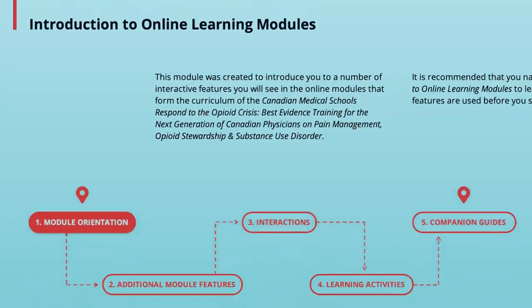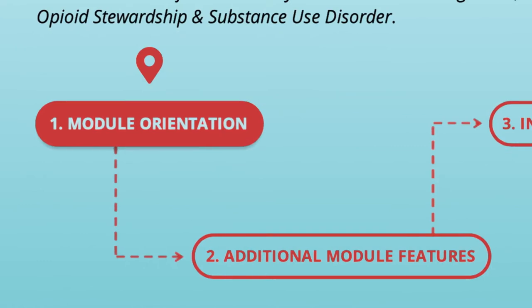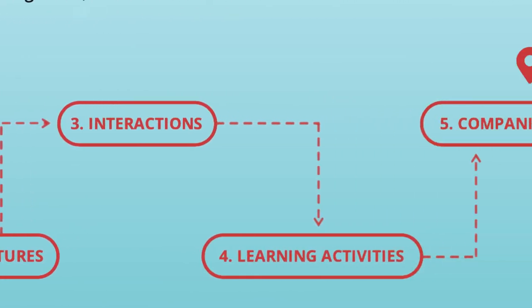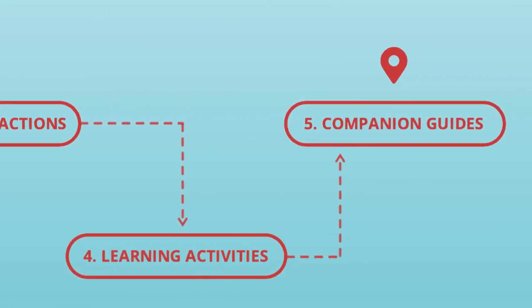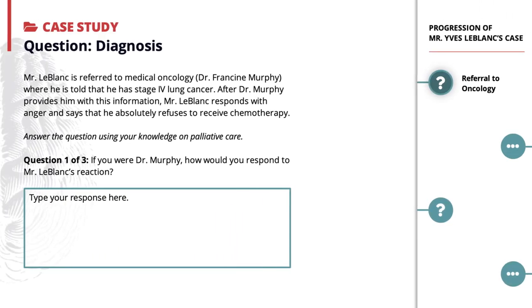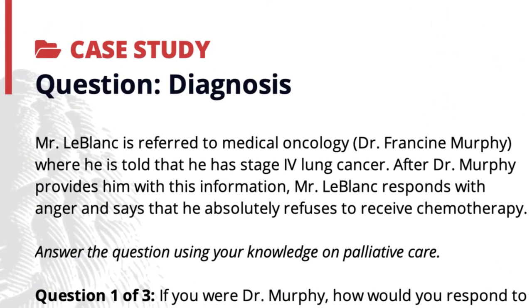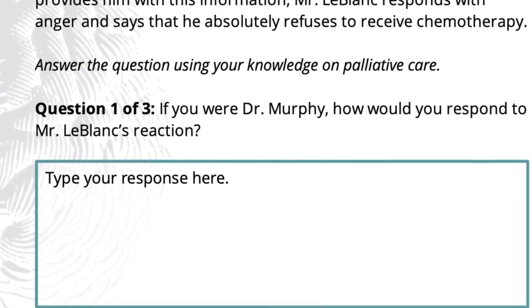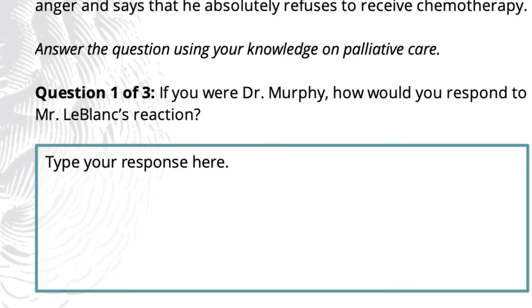There are ten modules that relate to the material as well as an introductory module. The modules cover public health and legal and ethical issues associated with chronic pain and opiate use disorder. They cover the pathophysiology of chronic pain, and the diagnosis and treatment of chronic pain as well as opiate use disorder.